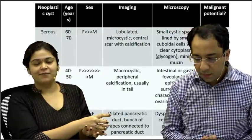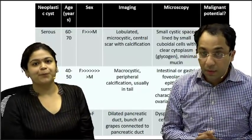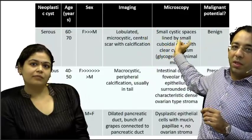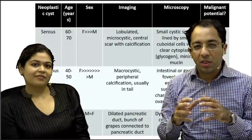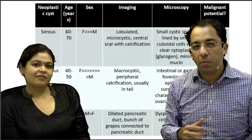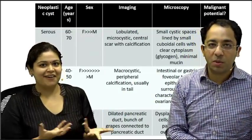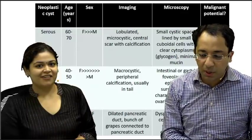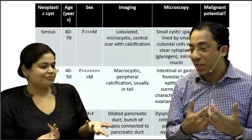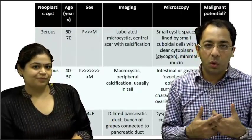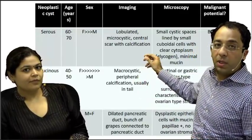In serous histology, you'll see cuboidal cells with clear cytoplasm and very minimal mucin, with very small cystic spaces — no ovarian stroma. Importantly for radiologists: serous is benign, while mucinous has malignant potential. Counter-intuitively, the serous looks more dangerous with its multi-cystic appearance, but the mucinous — appearing unilocular — is actually the one with malignant potential. This is a critical point for both radiologists and pathologists. For mucinous: macrocystic, peripheral calcification, typically in the body and tail.